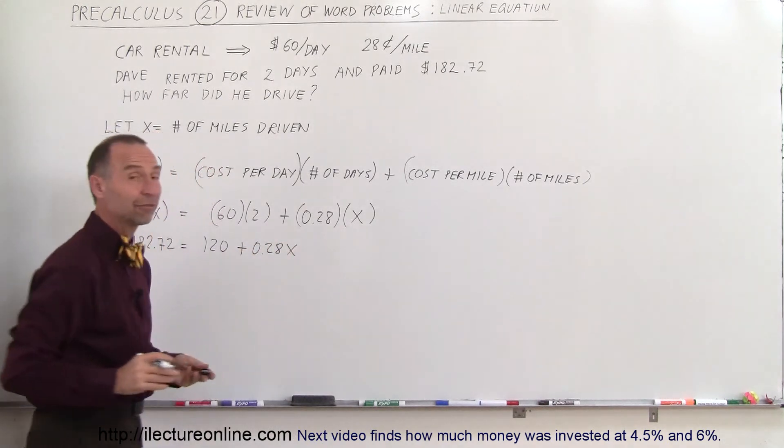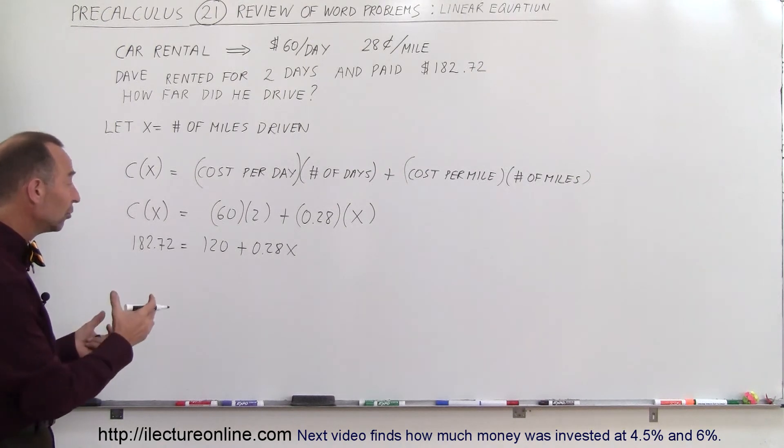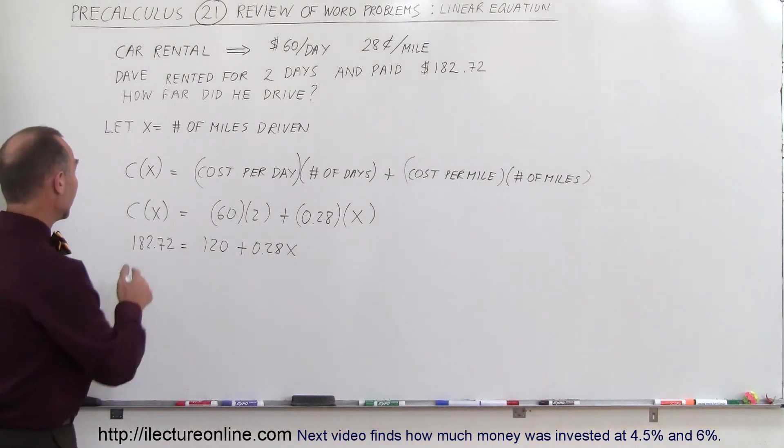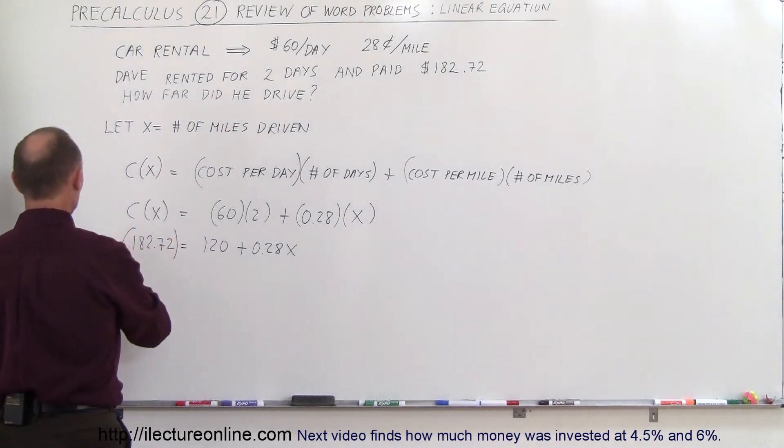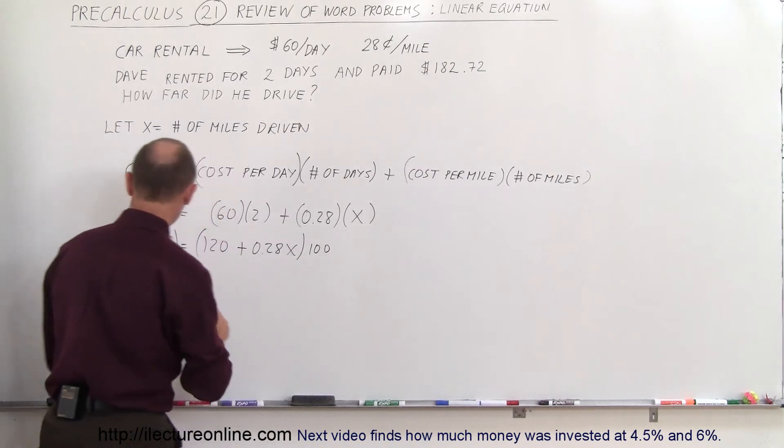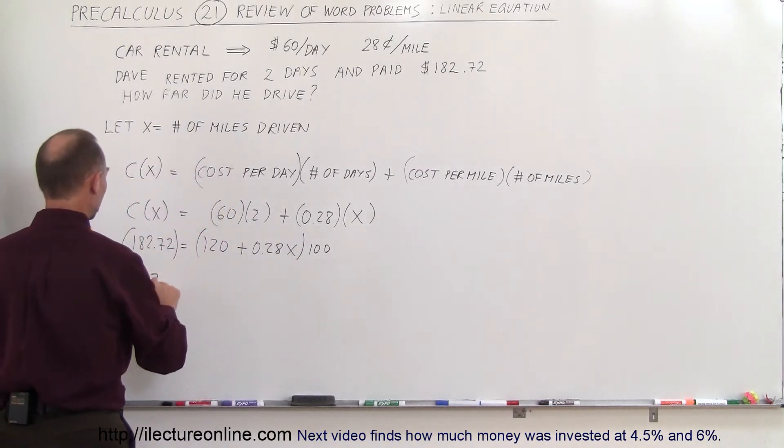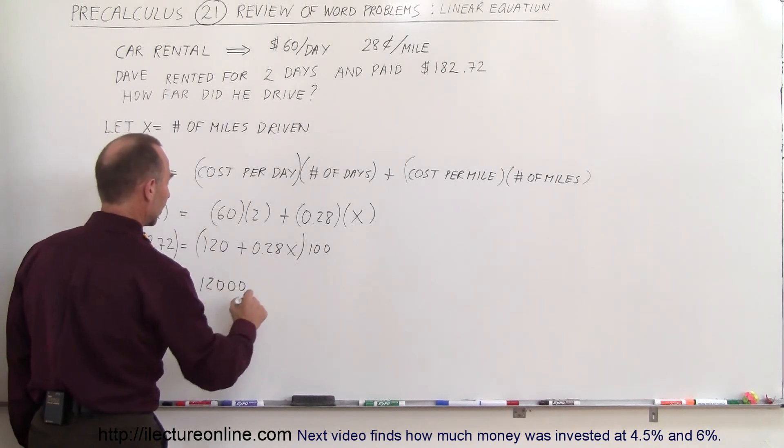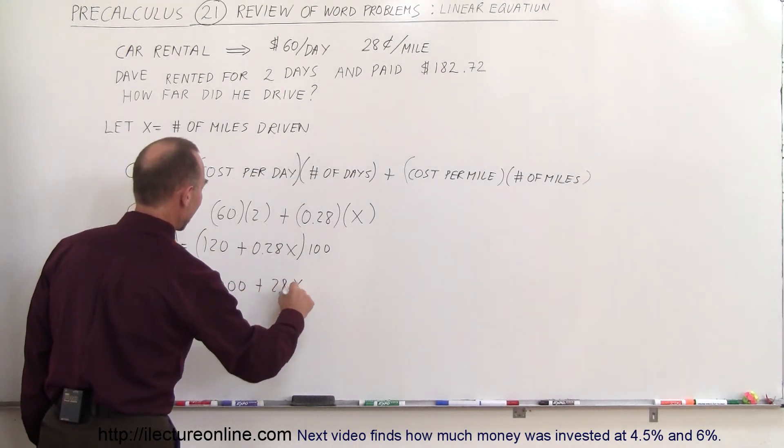And now we have to solve that for X. So here we can see that we have decimals. We want to get rid of the decimals first, so we multiply both sides by 100 to get rid of the decimal place. So 100 times 100. So this becomes 18,272 is equal to 12 with 3 zeros plus 28X.